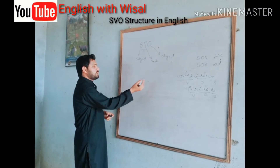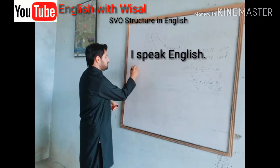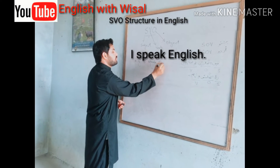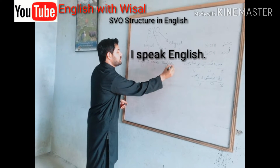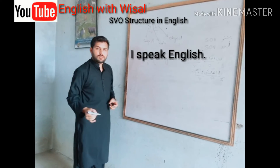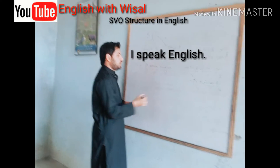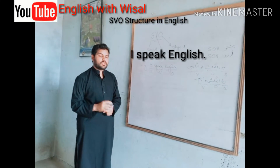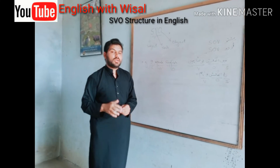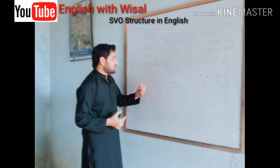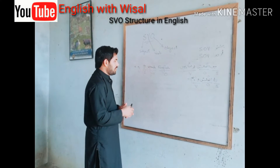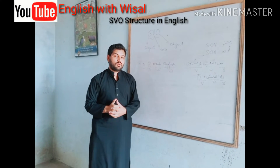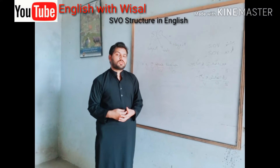Let me write an example. I will translate that example into English: 'I speak English.' In this sentence, you can see that 'I' is the subject, 'speak' is the verb, and 'English' is the object. This is the structure of English. Whenever you make, write, or speak sentences, you have to put the subject first, then the verb, and lastly the object. If there is additional information, you can also add adverbs or a complement, depending on the sentence.